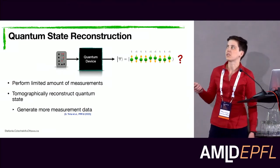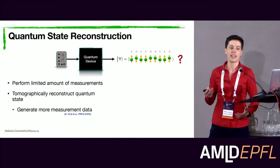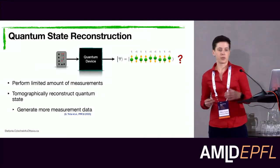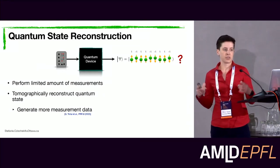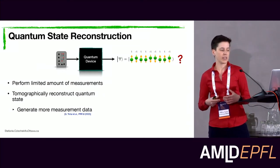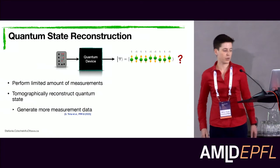Once we have reconstructed the state, we can generate more measurement data efficiently on a classical computer, since there is no wave function collapse. This data cannot contain additional information beyond what was captured in the finite measurements, but we can still use it to benchmark or calibrate our quantum device and to reduce the variance of operator expectation values.